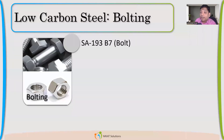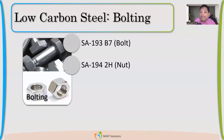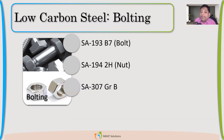For bolting: SA193 Grade B7 is used for bolts and SA194 Grade 2H is used for nuts. SA307 is normally used for foundation bolts; SA193 Grade B7 can also be used for foundation bolts but is a little more costly.